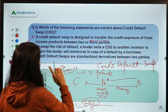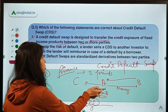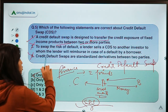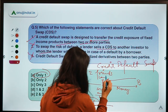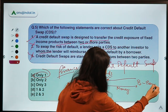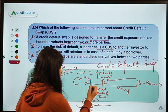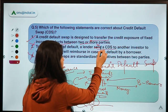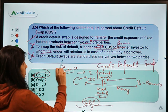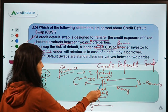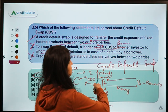Statement 1 says a CDS is designed to transfer the credit exposure of a fixed-income product between two or more parties — absolutely correct, because A is transferring his credit exposure to C. Statement 2 says to swap the risk of default, the lender sells a CDS to another investor. This is wrong: A the lender is buying a CDS from C, not selling it. The lender gets reimbursed by the third party C — so the lender is not reimbursing anyone.